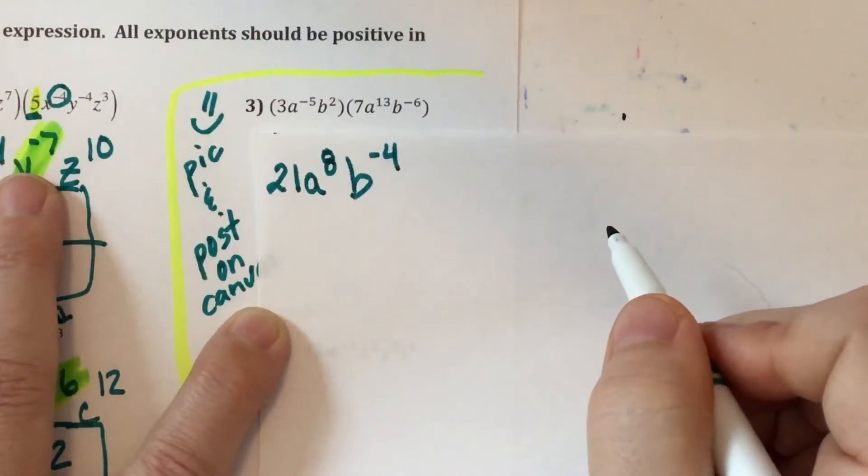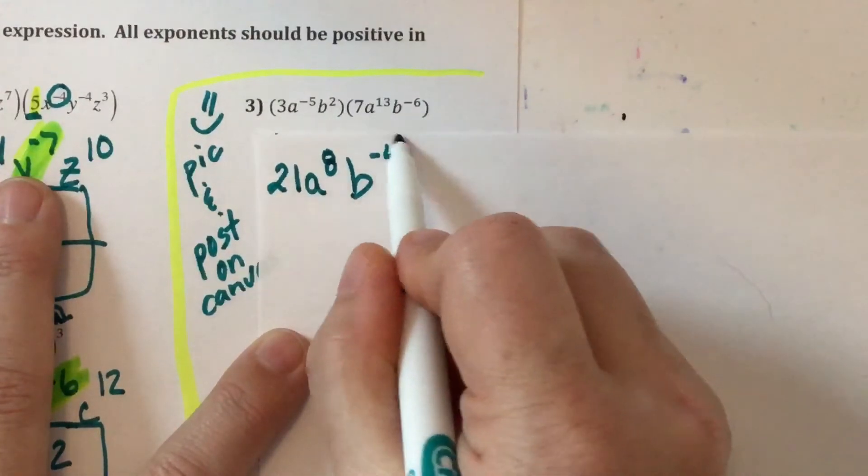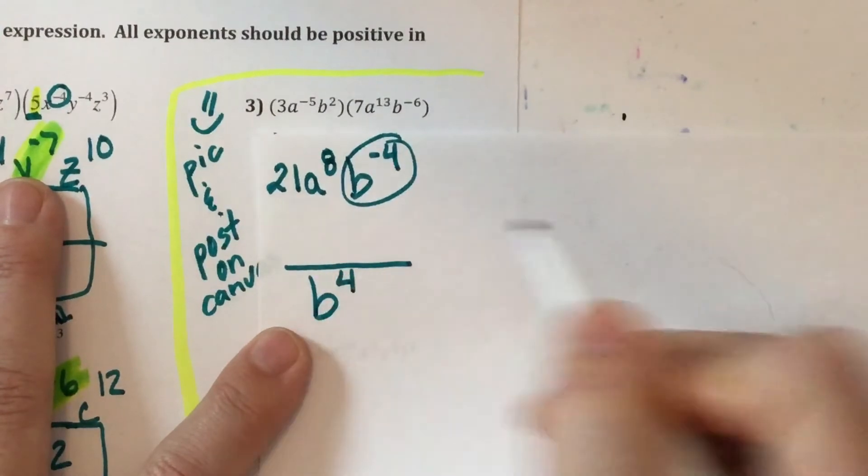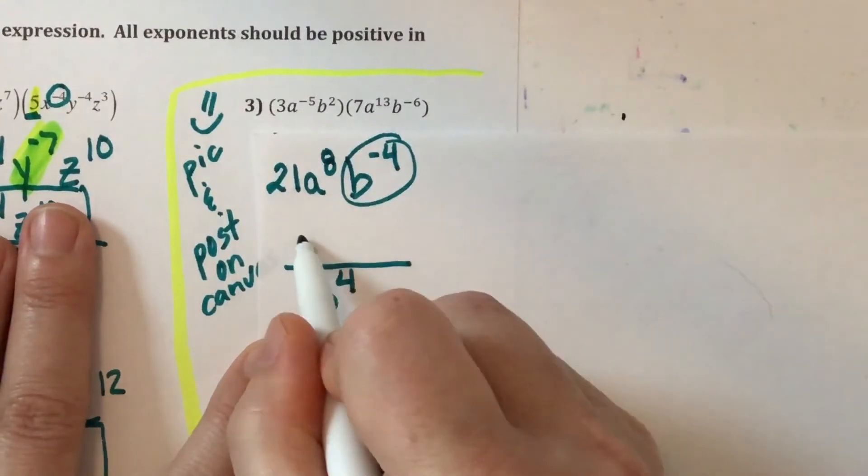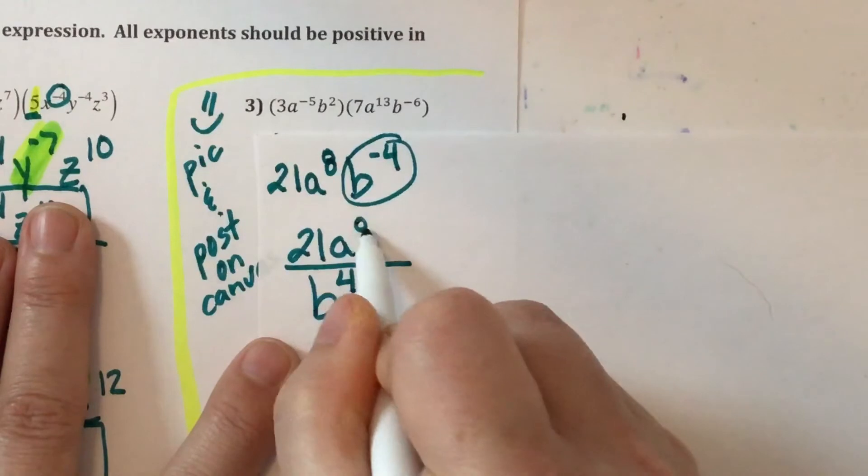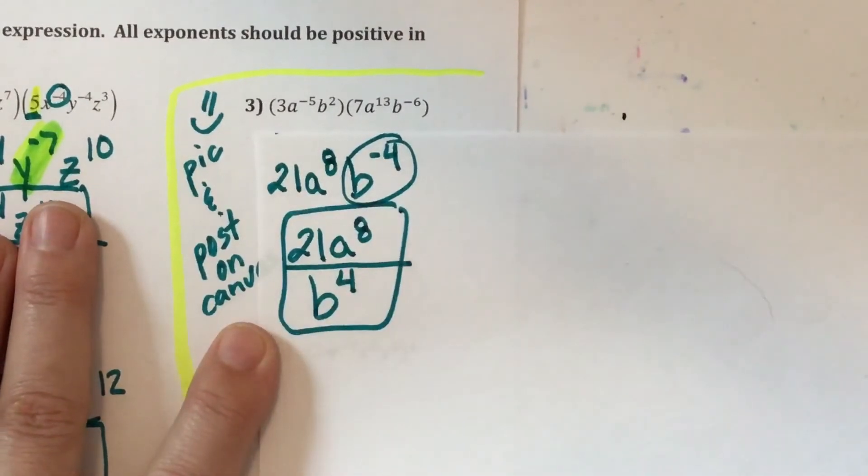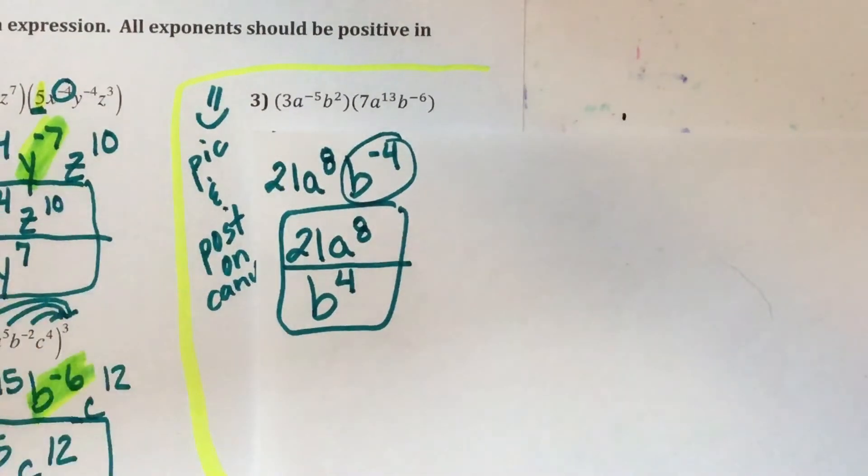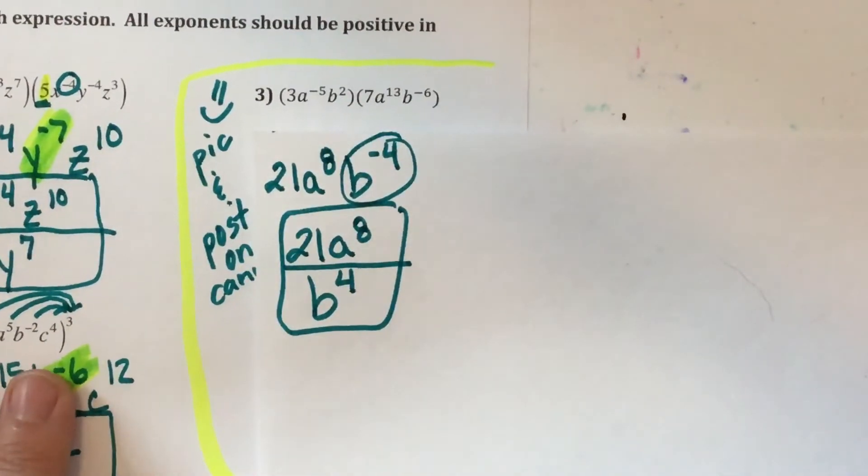But I can't leave something with a negative exponent so this B is going to drop to the denominator. So B goes down, the exponent switches to a positive 4. 21 stays put and the A to the 8th stays put and that's number 3. Hopefully those of you who did it yesterday did really well and you're getting this.